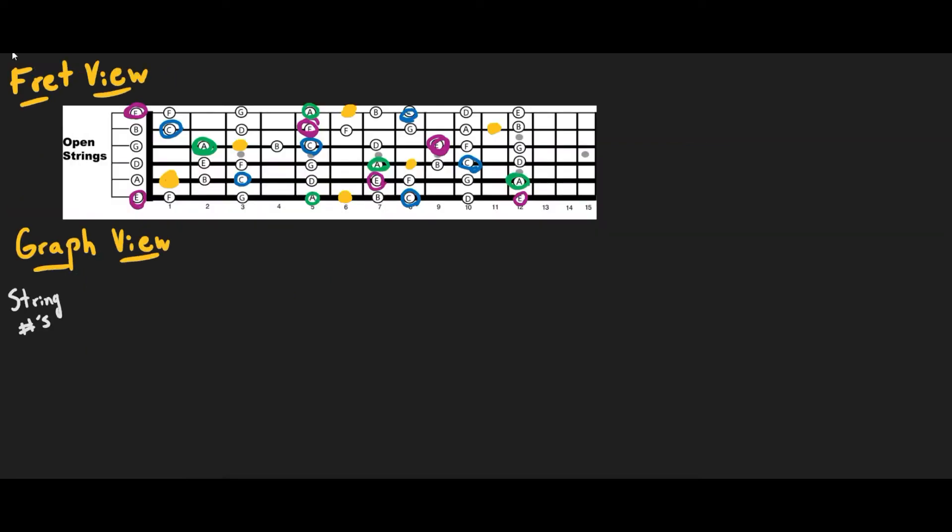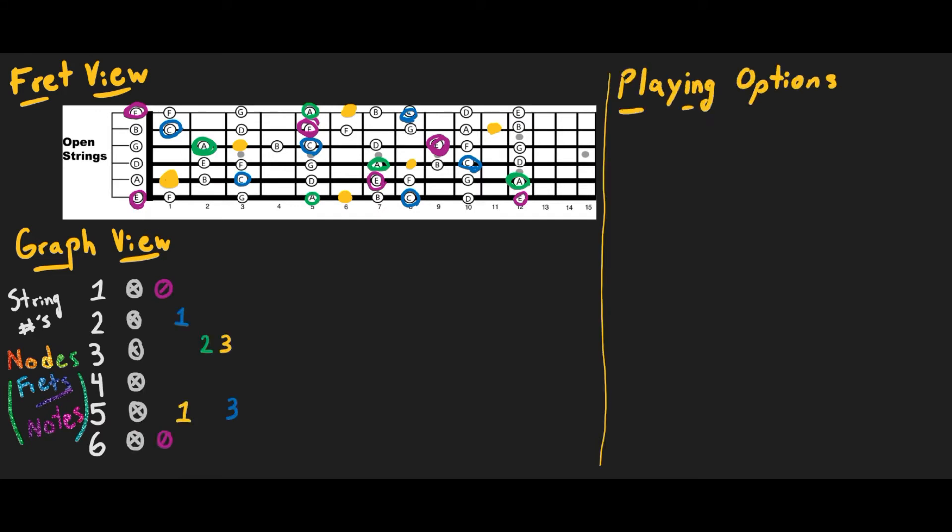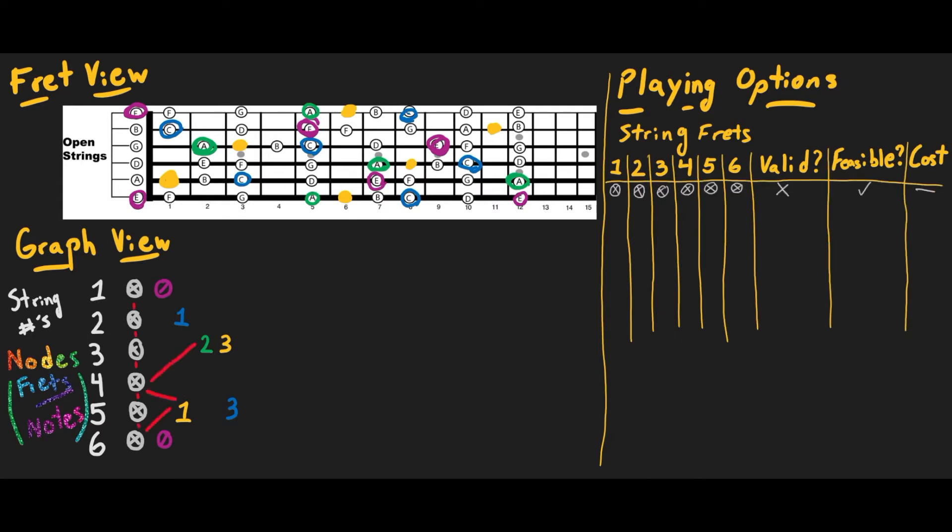To do so, I thought of the different possibilities within a branching tree structure, where the different strings on the instrument were layers in the tree, and the frets on which a desired note could be played were nodes in that layer. Knowing that I would need some selection criteria since only one fretting scheme could be chosen for a given chunk of the song,